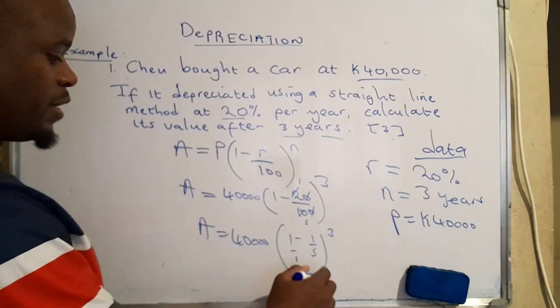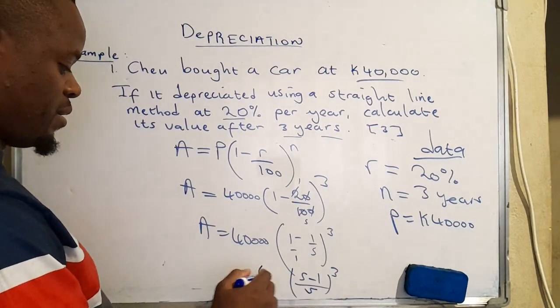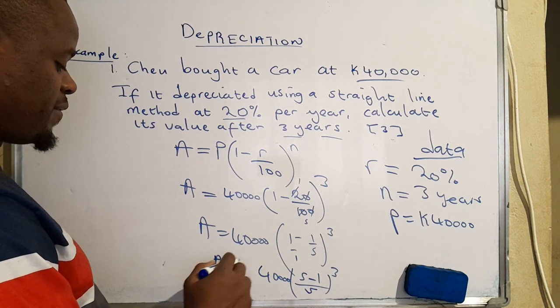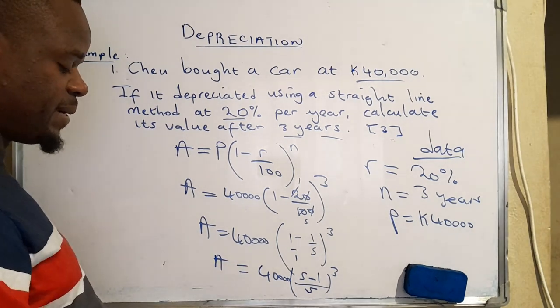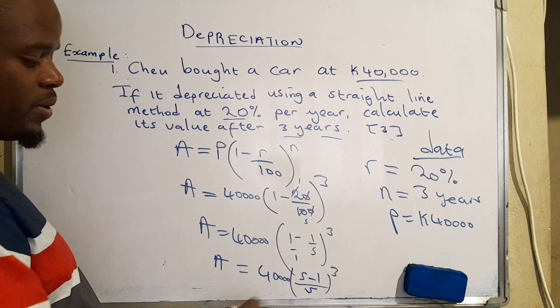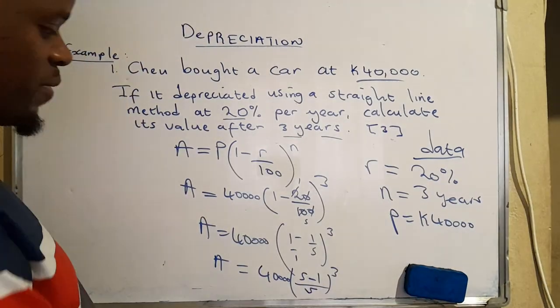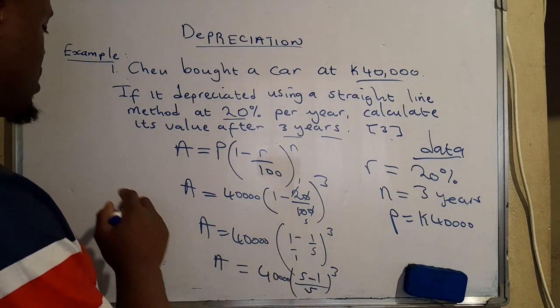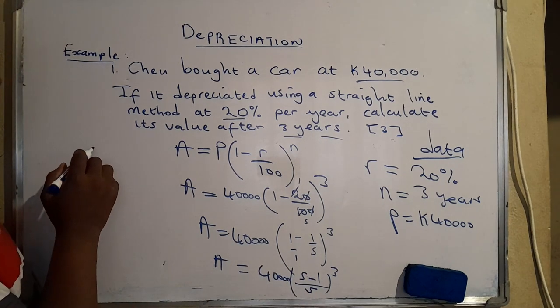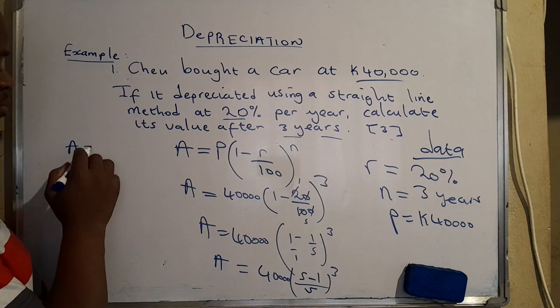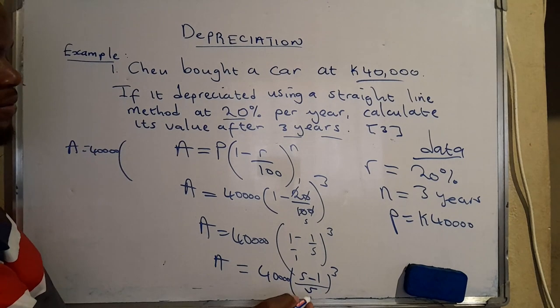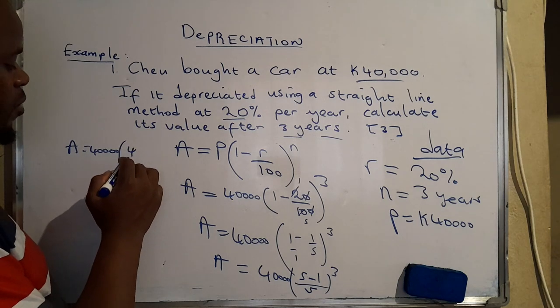This should be raised to the power 3, 40,000 on the outside, and we have the value of an item. So we can actually resolve this. Say A is equal to 40,000. On the inside of the brackets we are going to have 4 over 5.